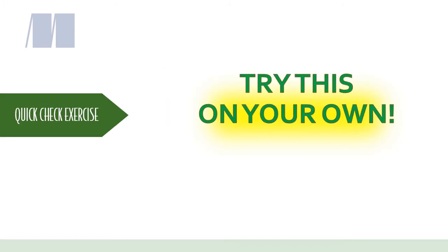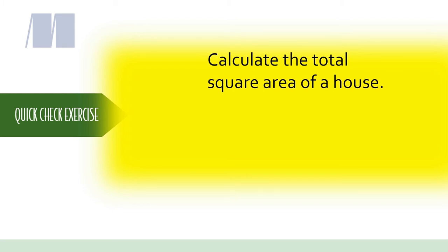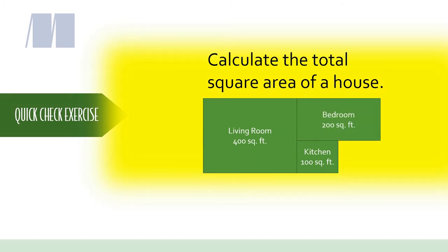Here's a quick check exercise to make sure that you've got it so far. Let's write a short program that's going to calculate the total square area of our house. We're going to create four different variables that hold the square footage of four different rooms in the house. The kitchen is 100 square feet, the living room is 400 square feet, the bedroom is 200 square feet, and the bathroom is 100 square feet.